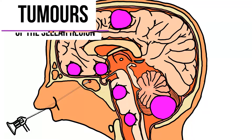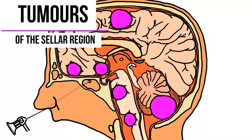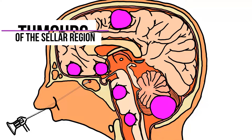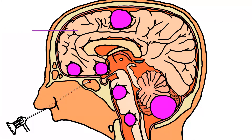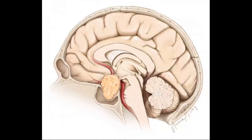Hey guys, it's Leila. Our topic for today is tumours of the sellar region. Starting with pituitary tumours, you can have the benign pituitary adenomas or the malignant one, pituitary carcinoma.